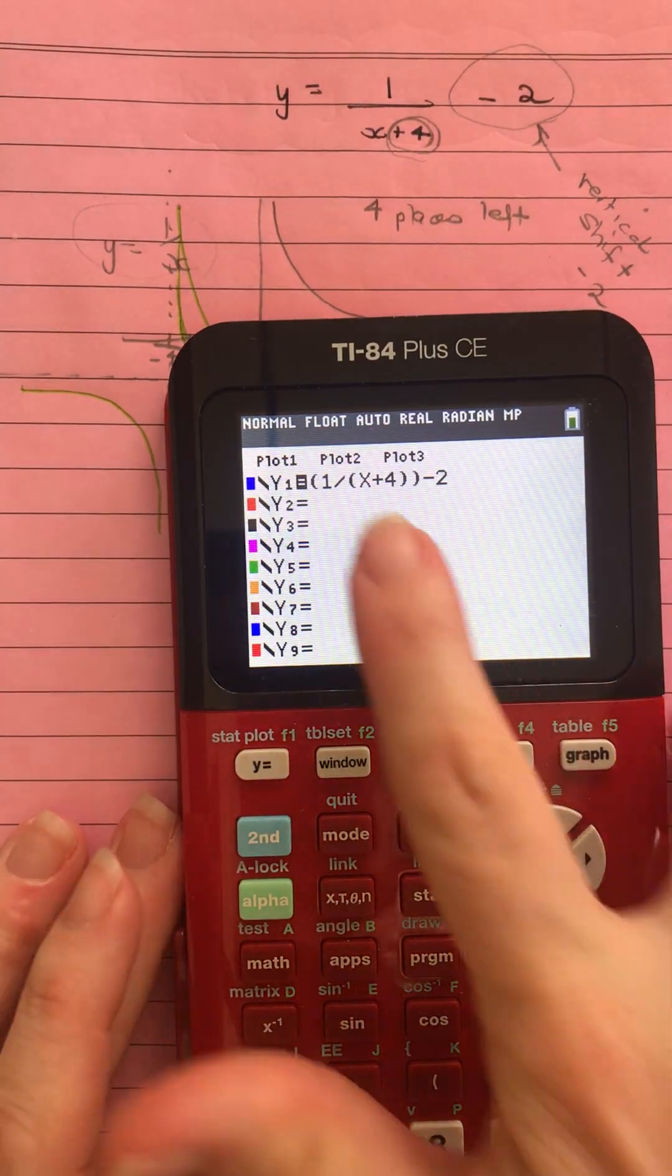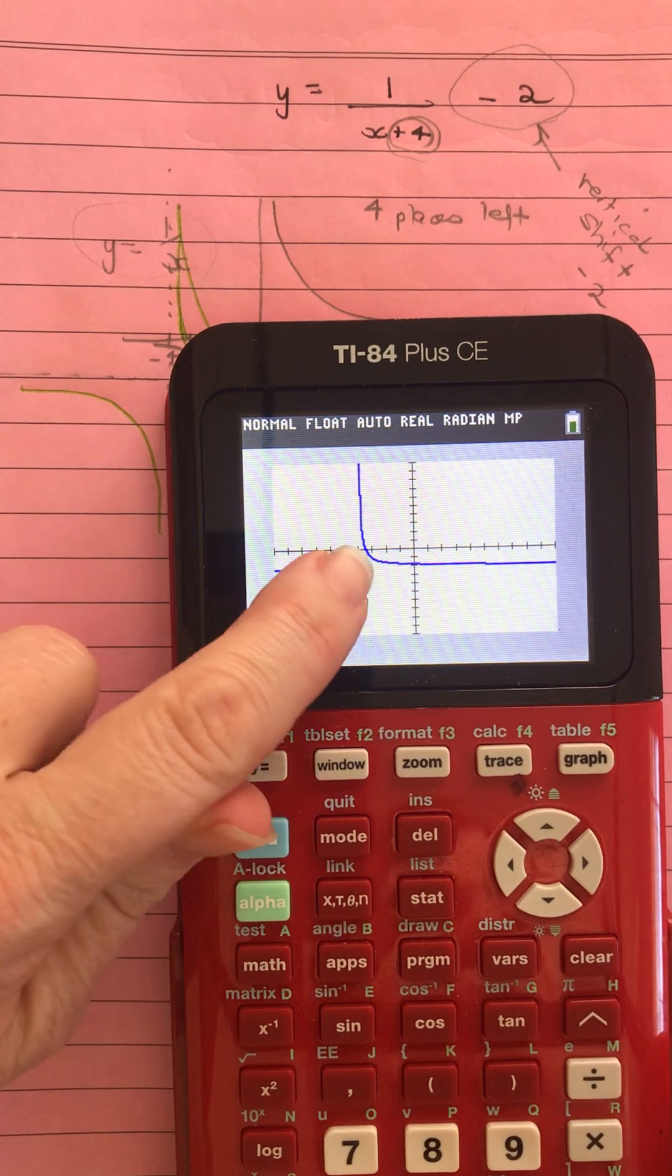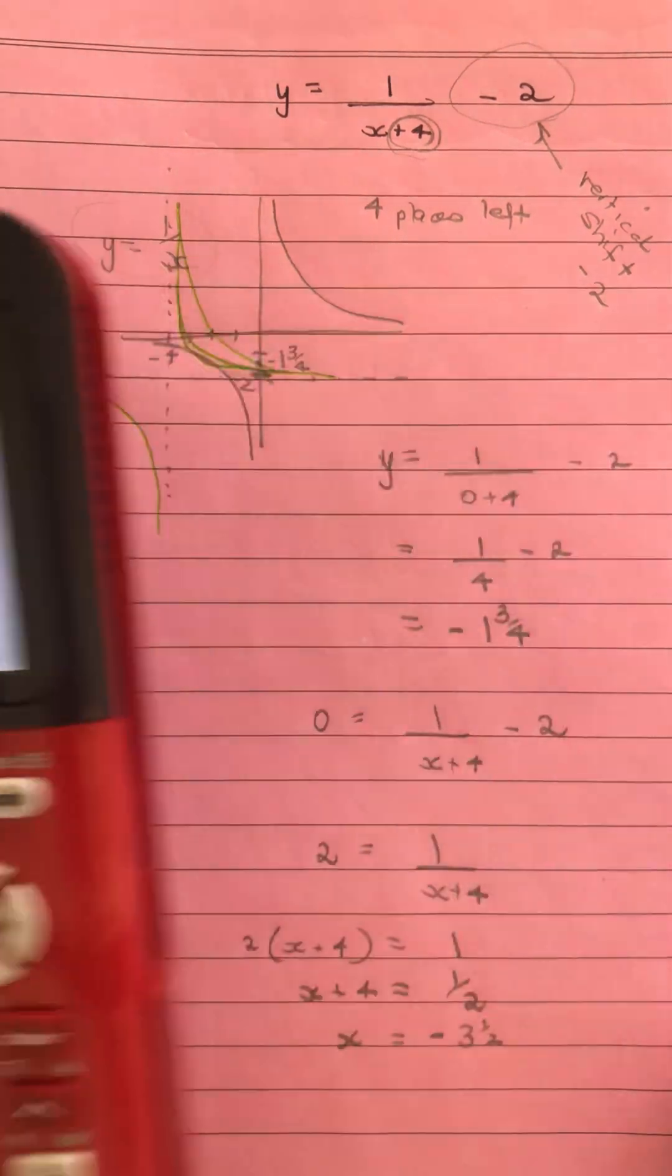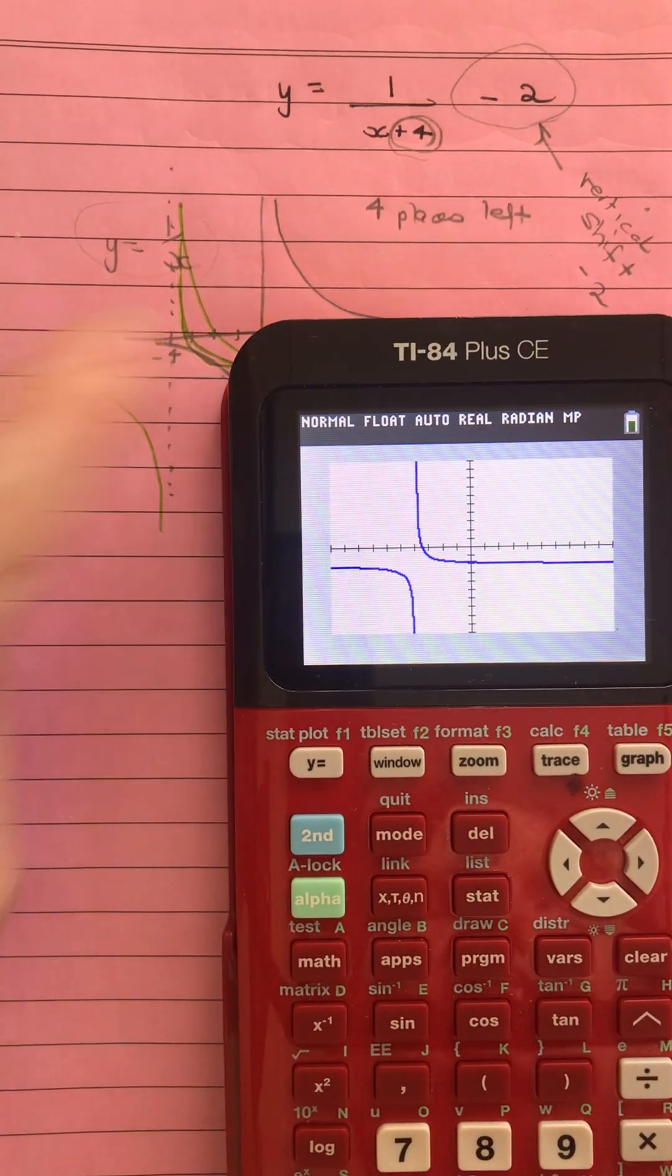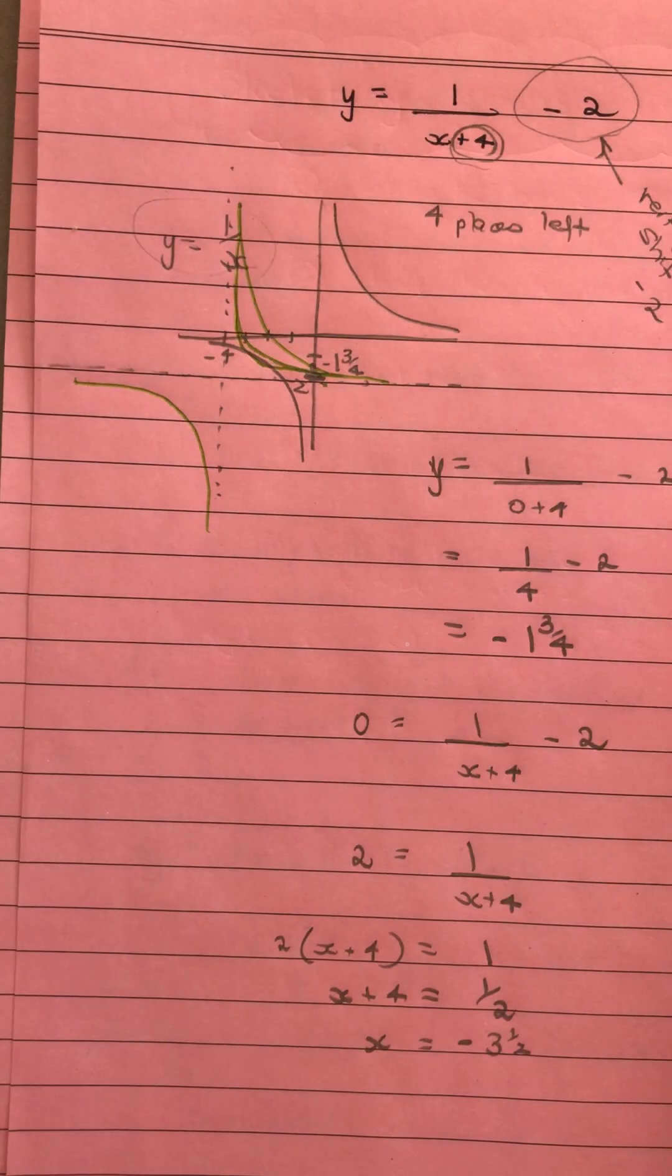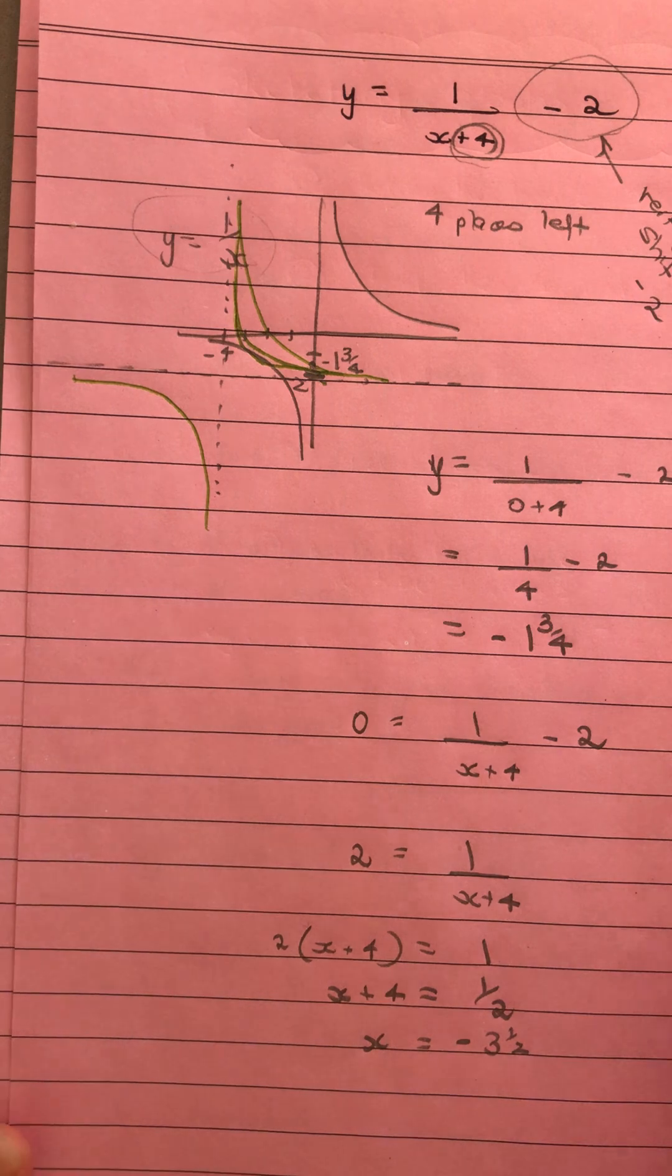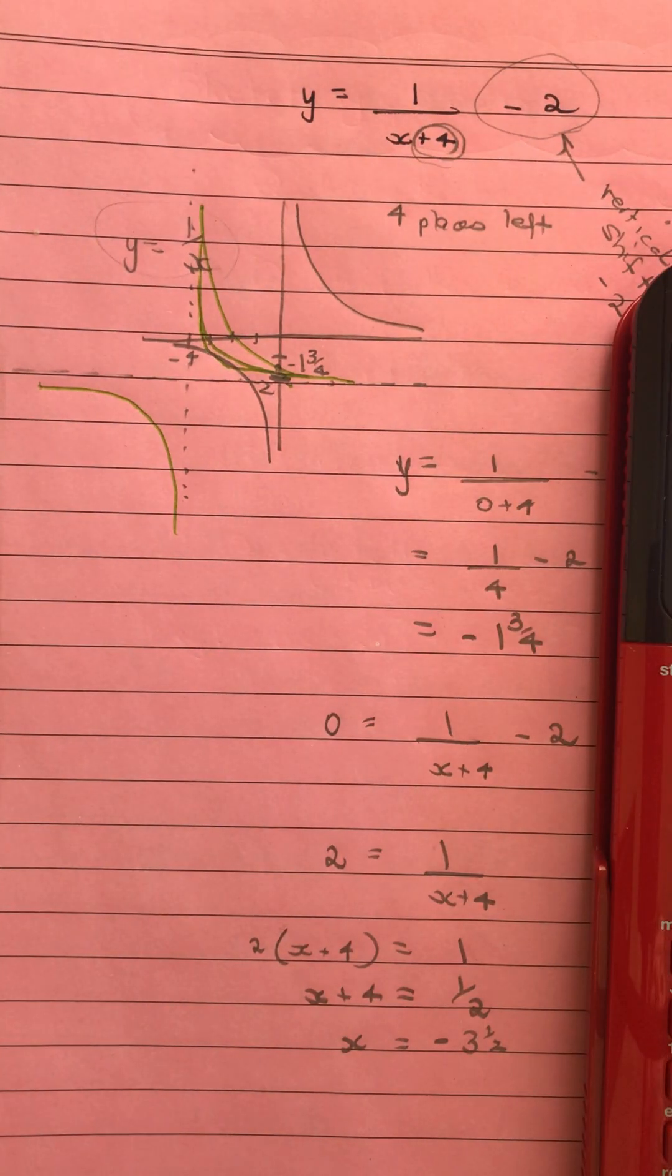My last step would be to pop it in my calculator and have a little look. So I've got it in here, and having a look there we can see we've got that point there and that point there. You can see that one is more like negative three and a half rather than where we had it in our quick sketch there. If you're in an exam, you might want to even sketch in pencil and go back in afterwards and do a revised version in pen. I hope that was helpful. As I said in my tip number five, if all else fails, do a table of values. That's always an option as well.